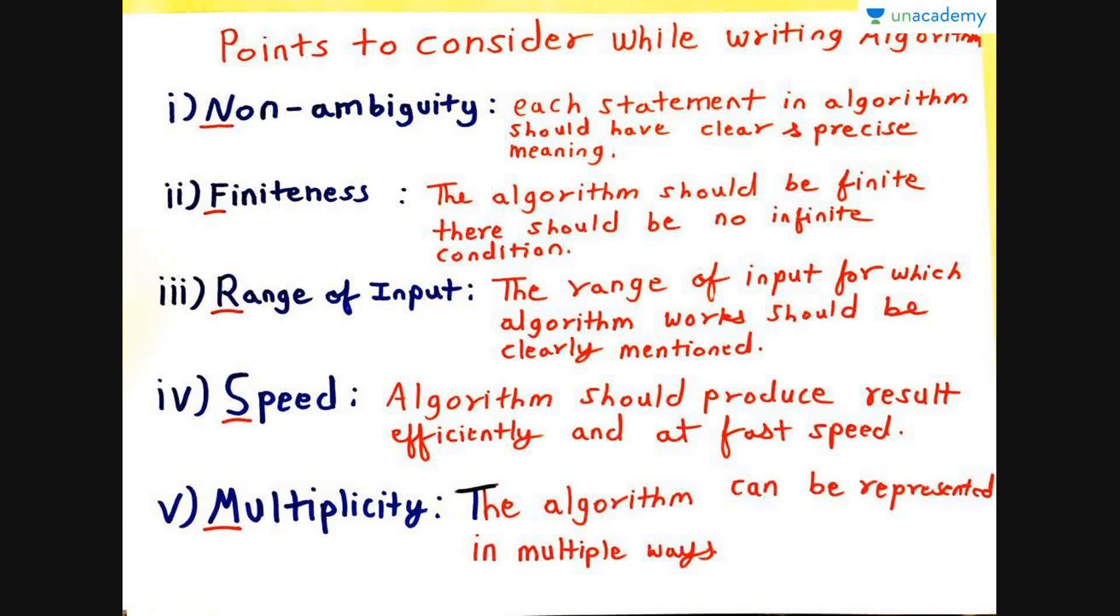The third thing is the range of input. The range of input for which the algorithm works should be clearly mentioned. See, like suppose I write a program and it works only for the numbers which are greater than 0 and less than 100. Then I should mention to the user that the program runs only for the numbers which are greater than 0 and less than 100. Otherwise, he will enter an input, suppose minus 1, and then the output will be an error.